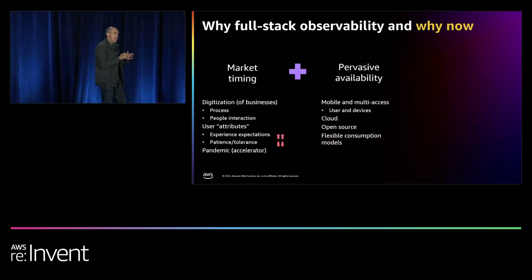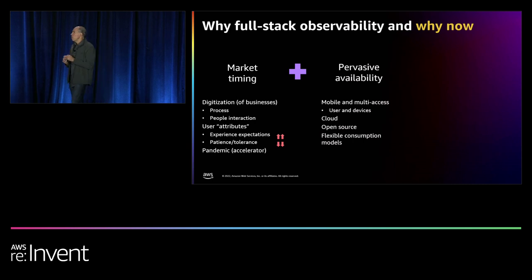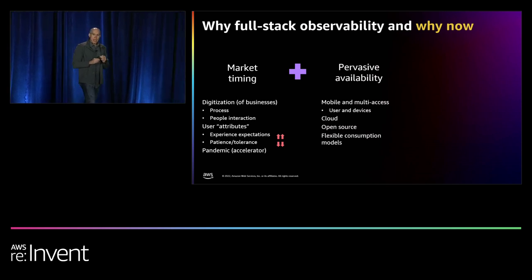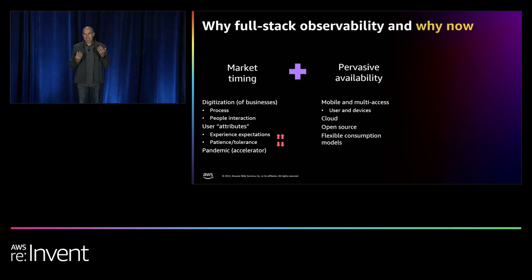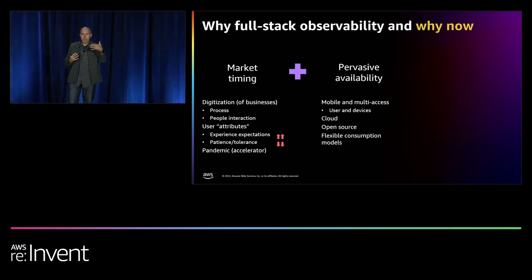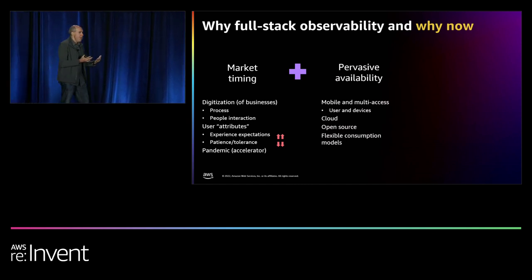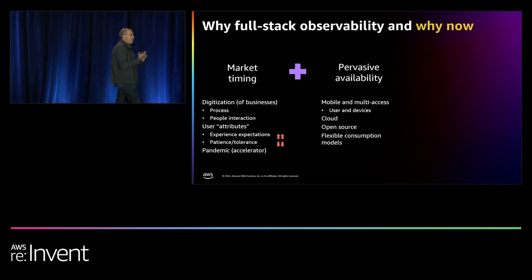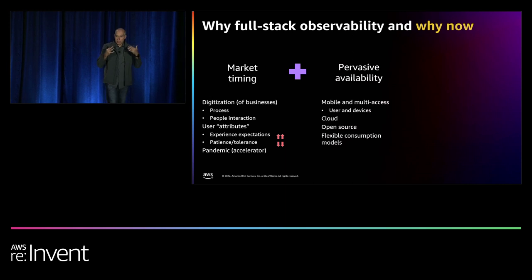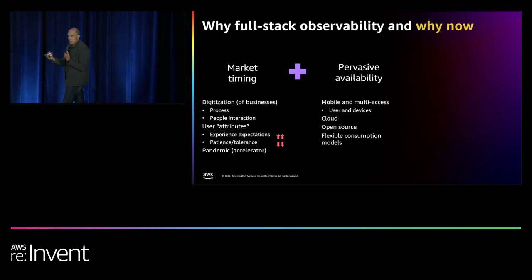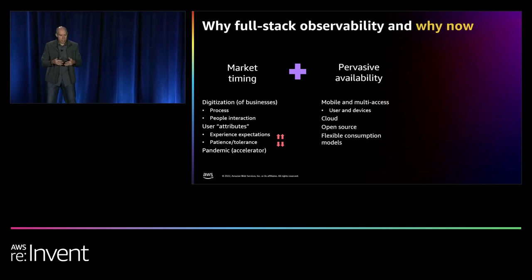Digitization is happening everywhere. There are new attributes for users that form a dichotomy: experience expectations are going high while the patience of homo sapiens is going very low. Working from home, you have no patience to wait — you switch to another app if someone doesn't deliver food on time, or if your bank doesn't deliver when expected, or if your business application isn't fulfilling customer needs because competitors may be doing the same faster and better. The pandemic has amplified and accelerated all of this.